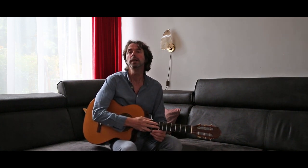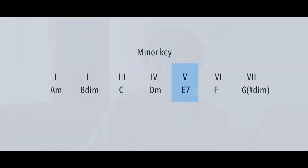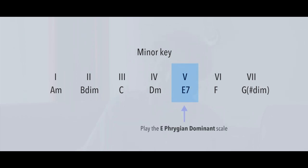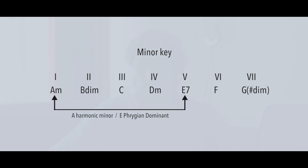Of course you can compose a total section or even a whole song in the Phrygian dominant mode, but there are more advanced ways to utilize this scale. In the minor key, the major 5th degree creates a lot of tension and wants to resolve to the tonic. Over this chord you can play a Phrygian dominant scale, and that will work very well. Keep in mind that in this particular case, the Phrygian dominant scale would also be seen as the harmonic minor scale of the tonic. So A harmonic minor could be referred to as E Phrygian dominant, because E Phrygian dominant is the 5th mode of the A harmonic minor scale.